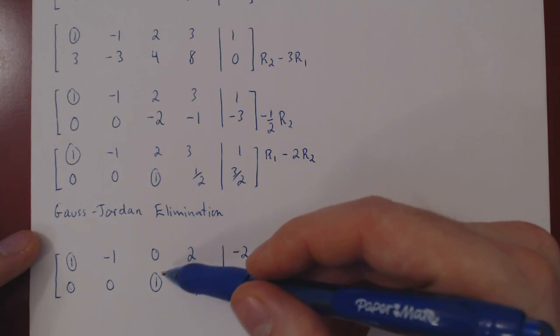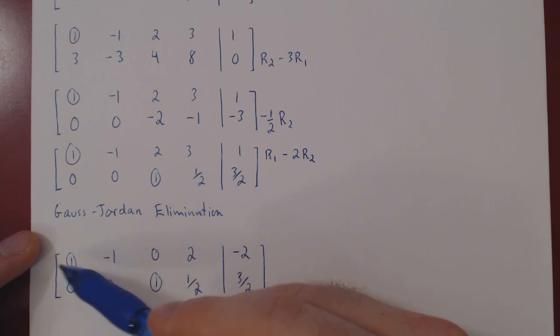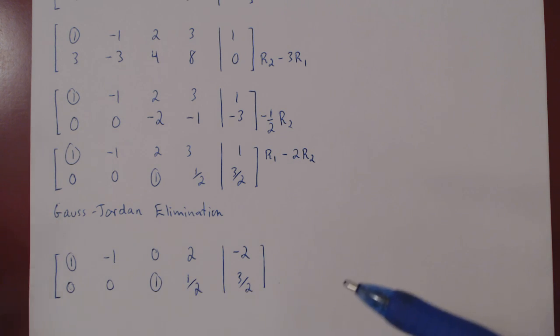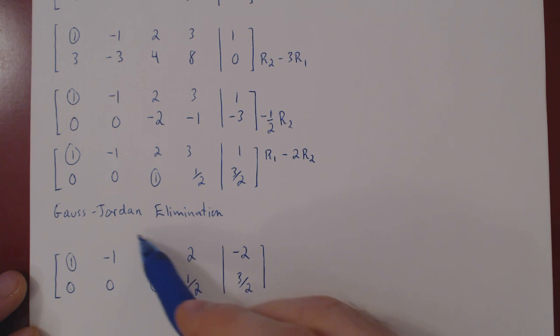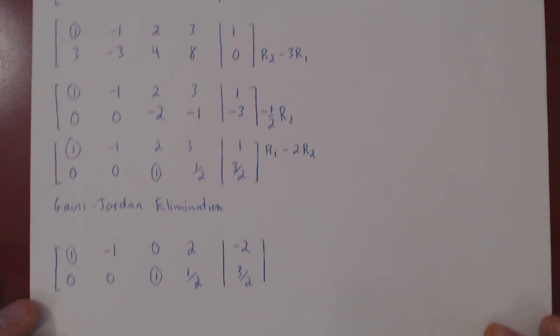So every entry above this leading one is 0. We move to the next leading one. There's nothing above it, and so we're done with Gauss-Jordan elimination. As the matrix now is in reduced row echelon form, we can write the final solution set quite easily, and it will already be in simplified form.